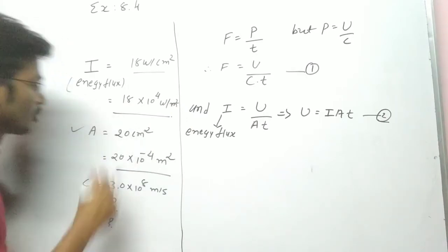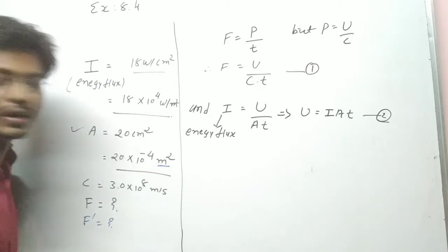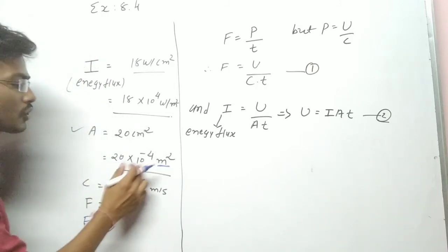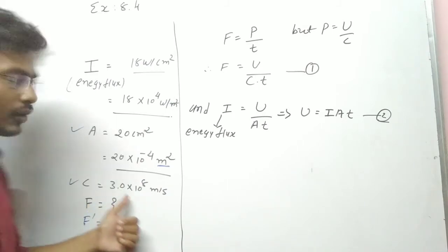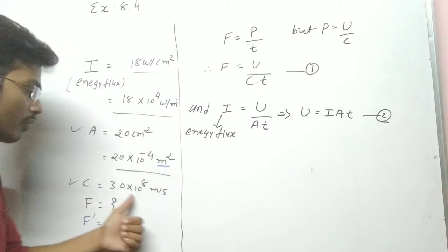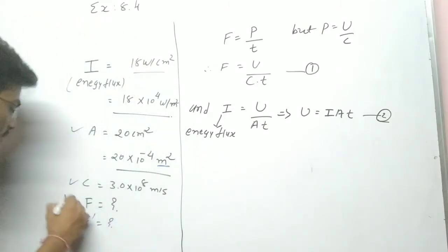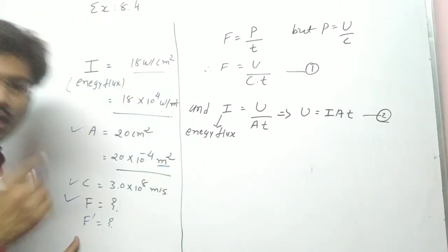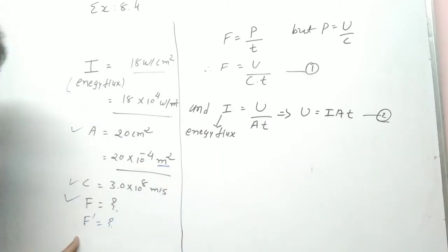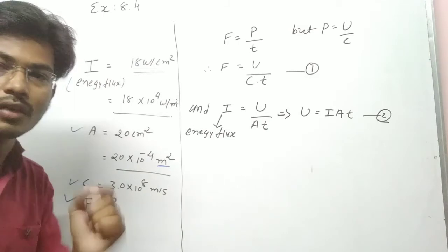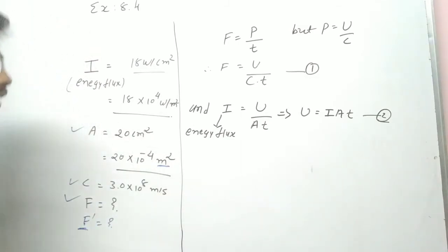The area given is 20 centimeter square, which we also need to convert to meter square: 20 × 10⁻⁴ meter square. The value of C is 3.0 × 10⁸ meter per second. We have to find out F for the non-reflecting case, and also F dash — the force when the surface is perfectly reflective.